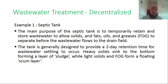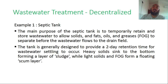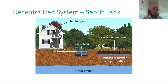In a decentralized setting, we can use a septic tank. The main purpose of a septic tank is to temporarily retain and store wastewater to allow solids and FOG — fat, oil, and grease — to separate before the wastewater flows into the drain field. The tank is generally designed to provide a two-day retention time for settling. Heavy solids sink to the bottom forming a sludge layer, while light solids and FOG form a floating scum layer on top.